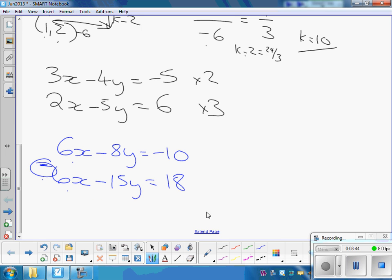And if we subtract those equations from each other, 6 take away 6 gives nothing. I've got to be careful here with my two negatives. Minus 8 minus minus 15 is 7. And minus 10 minus 18, that's minus 28. So y must be equal to minus 4.